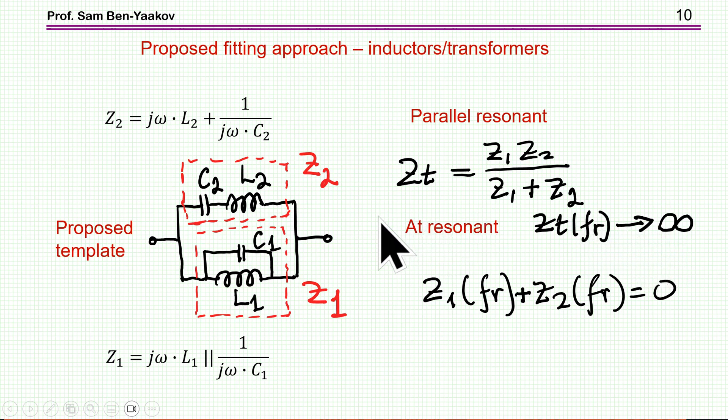So, the condition for parallel resonance of the whole structure is having Z1 at the resonant point plus Z2 at the resonant point equal to zero. This is the condition.